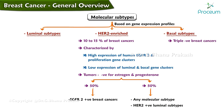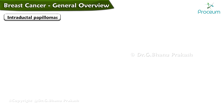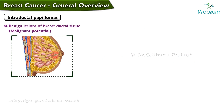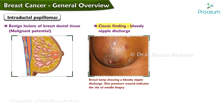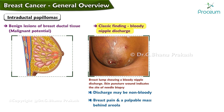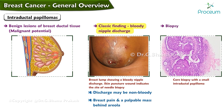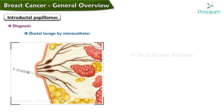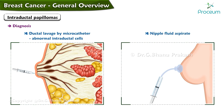Basal subtypes mostly fall under the category of triple-negative breast cancers because they are estrogen receptor, progesterone receptor, and HER2 negative. Intraductal papillomas are benign lesions of breast ductal tissue that may have malignant potential. The classic finding is bloody nipple discharge, though the discharge may also be non-bloody. Other findings include breast pain and a palpable mass behind the areola. A biopsy should be performed to rule out breast cancer. Ductal lavage by microcatheter is the preferred way to test for abnormal intraductal cells. Treatment is surgical removal.